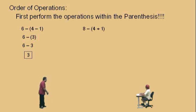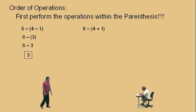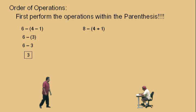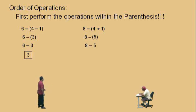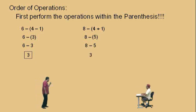Let's do another one. 8 subtract the quantity 4 plus 1. We have 4 plus 1 in parentheses. What is 4 plus 1? 5. That's right, and it's 8 subtract 5. Again, we have a positive 5 in the parentheses, so we don't necessarily need it. What is it, Charlie? 3. Yes, the same as the one before — our answer is 3. But notice we're doing the parentheses first.